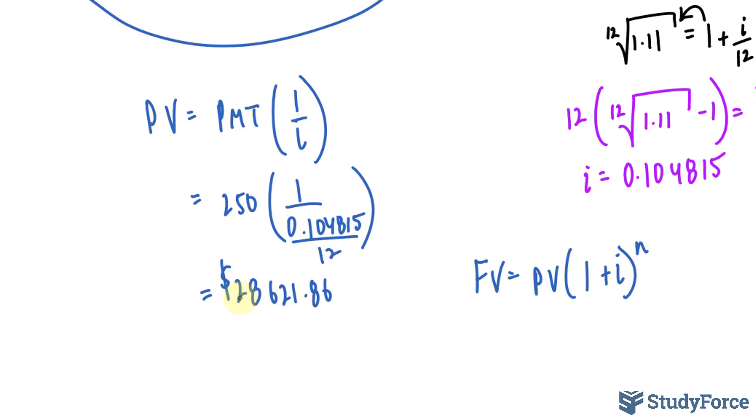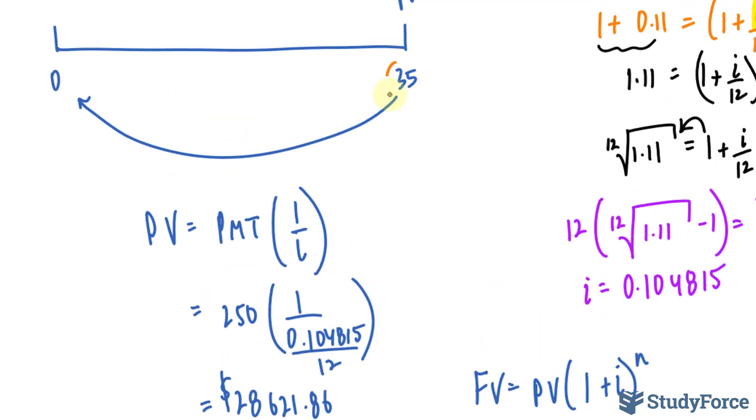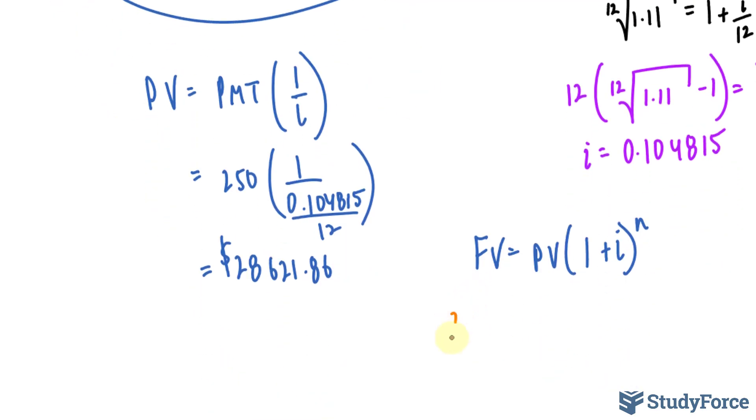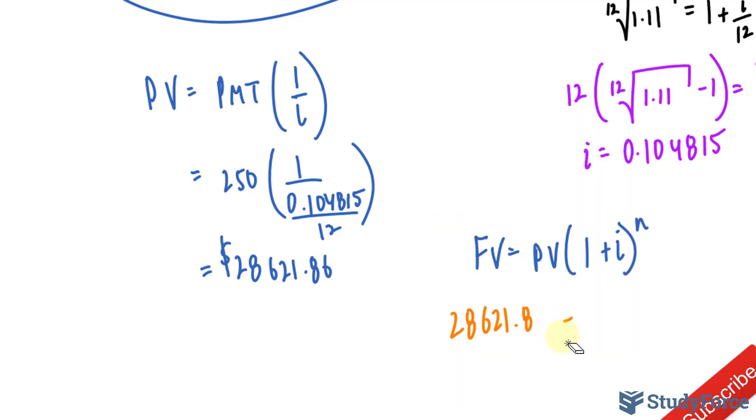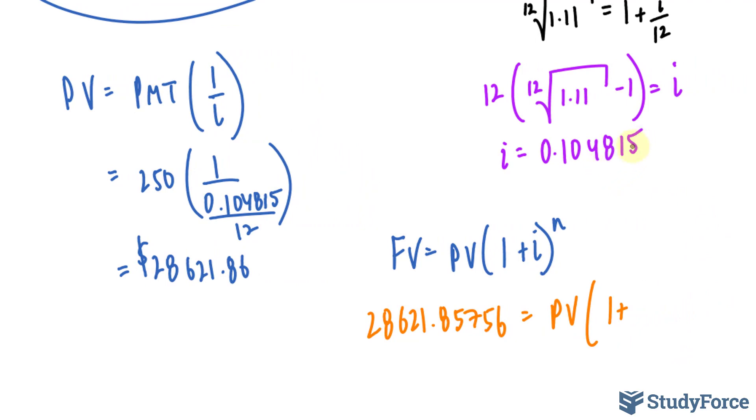Now the future value, 35 periods from today, is 28621.86. And it actually helps to keep all those decimal places, so 85756. When you're doing the calculation, it is a good idea not to round until the very end. So I'll write those numbers down. The present value is what we're looking for, that is today, 1 plus, and we'll use the same interest as before, so this number divided by 12.